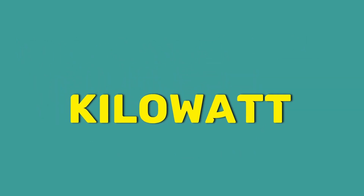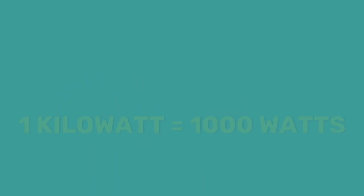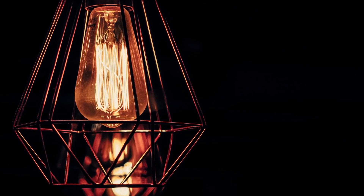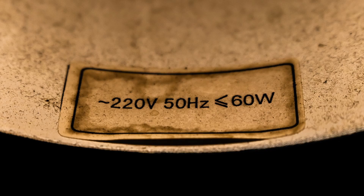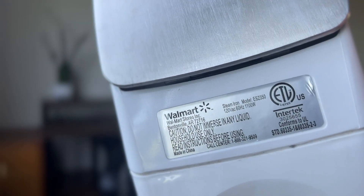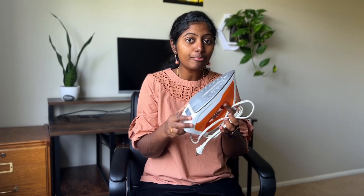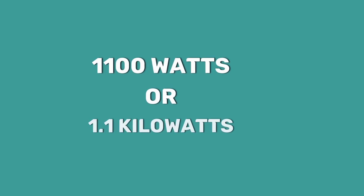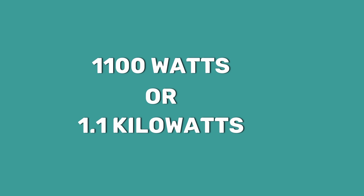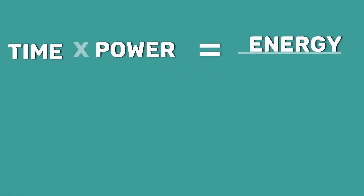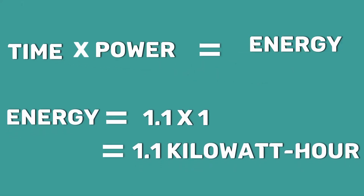A Kilowatt is another term used in the measure of power. The prefix Kilo means 1000, so a Kilowatt is simply 1000 Watts. The power of most appliances is usually stamped on the bottom or back of the appliance or on its nameplate. For example, this iron box has a 1000 Watts label. Therefore, it requires 1000 Watts or 1 Kilowatt worth of power to work. This means if we are ironing our clothes for one hour, then we are using 1 Kilowatt hour of electrical energy.